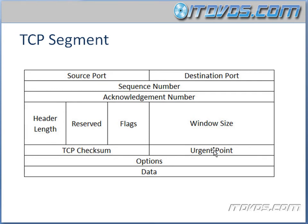The urgent pointer, if used, specifies where the non-urgent bits start. This is where various options can be set, and this is the data that's actually encapsulated in our segment — you can see it in the segment where the option has been selected.